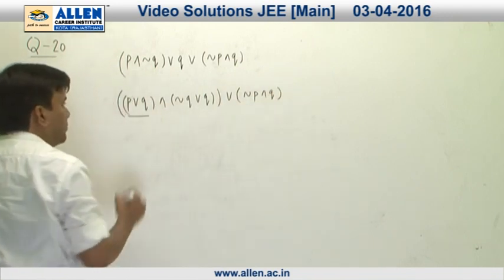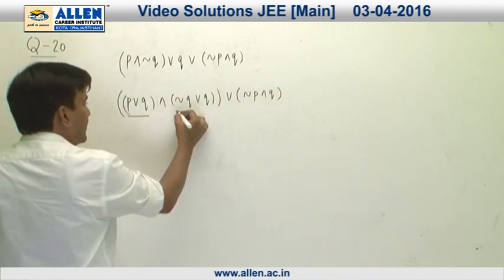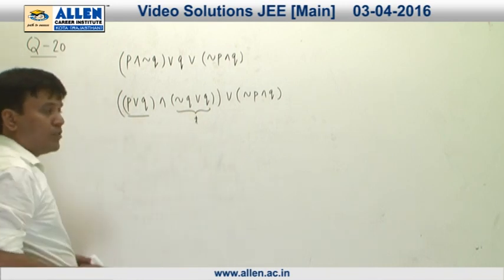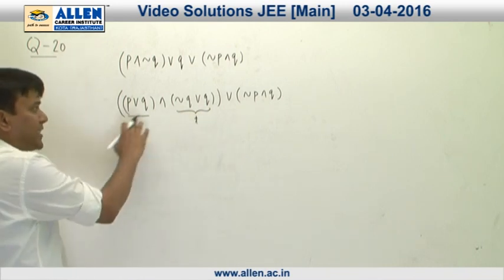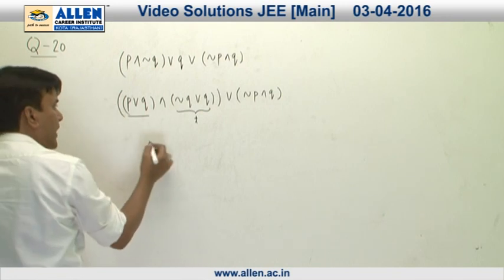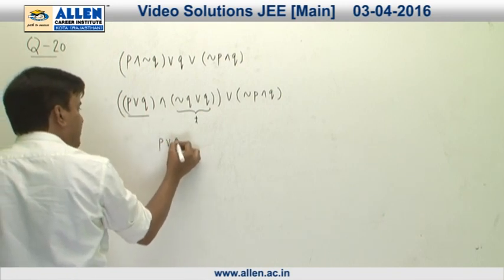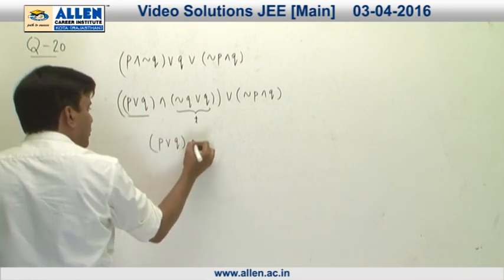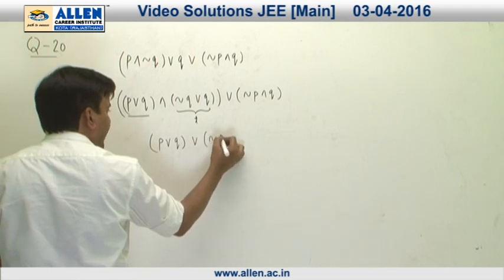The first part is p or q, and this can be identified as a tautology. If we are saying there is some statement s and tautology, this is going to be s itself. So this is going to be p or q or negation of p and q.